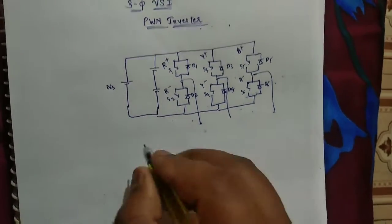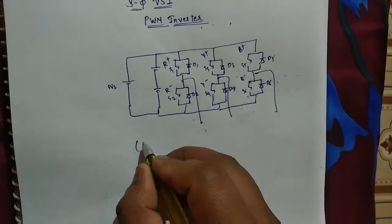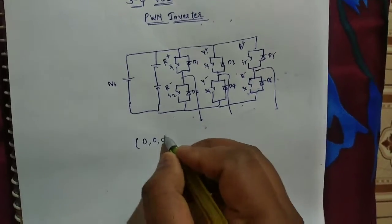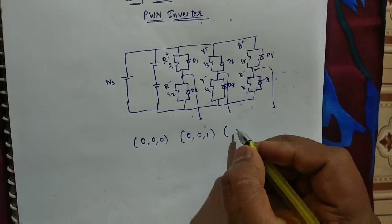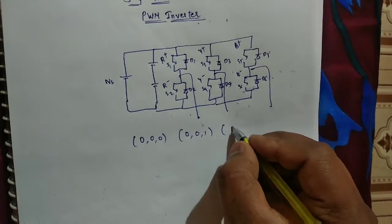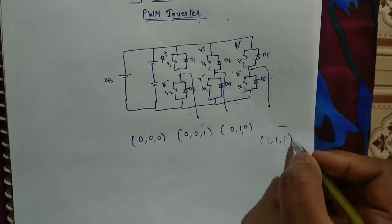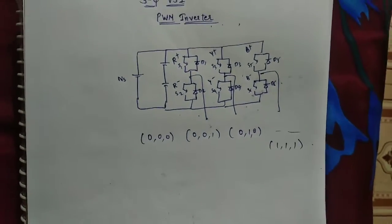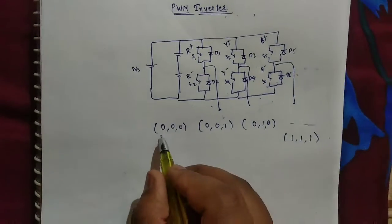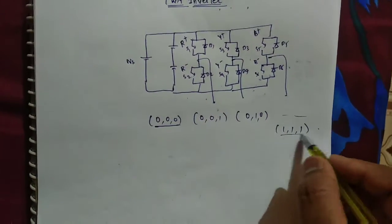So there are eight possibilities: zero zero zero, zero zero one, like this eight possibilities will be there. Now how to find whether zero zero zero is operating or one one one is operating.